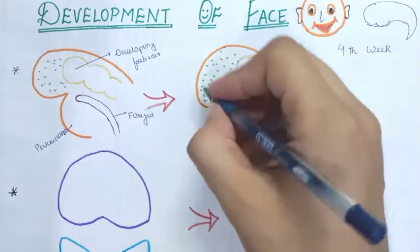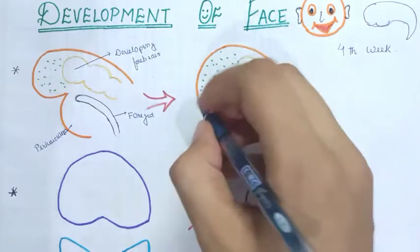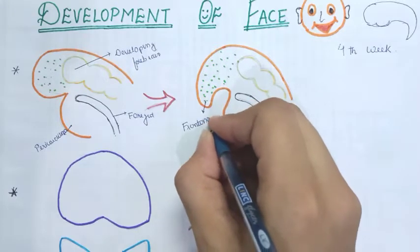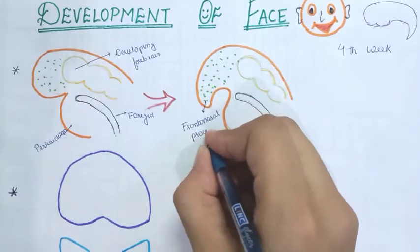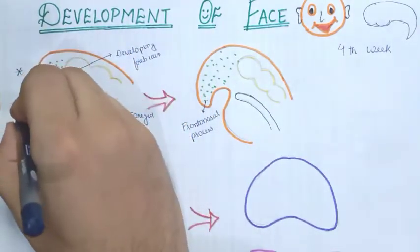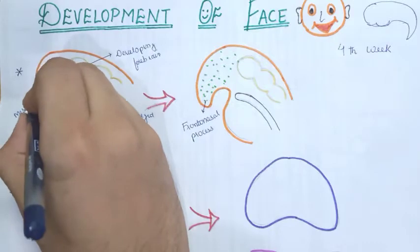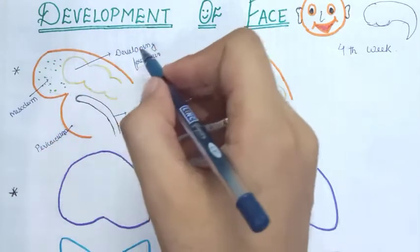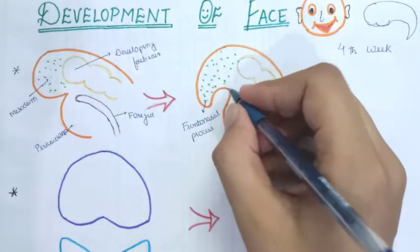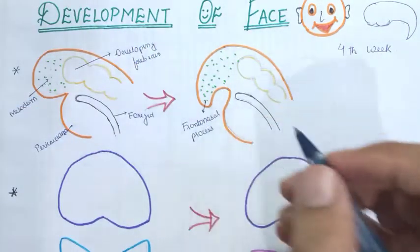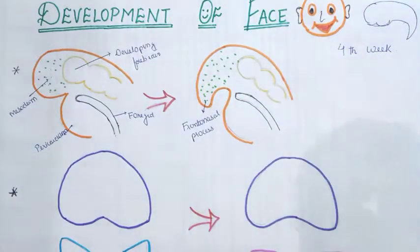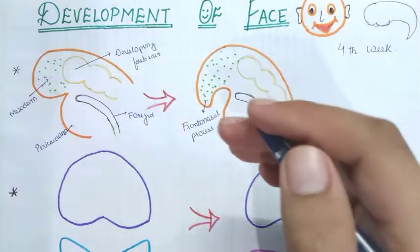This downward projection forms a process called the frontonasal process. So if asked how the frontonasal process is formed, it is due to the proliferation of the mesoderm lying in front of the bulge produced by the developing forebrain. It comes down and covers the stomatodeum portion and is called the frontonasal process. The nearby region includes the pericardial region, the foregut, and the buccopharyngeal membrane.